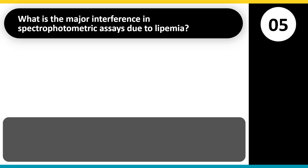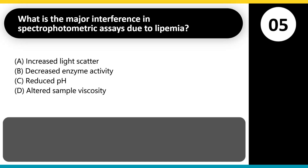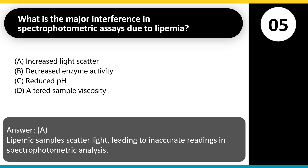What is the major interference in spectrophotometric assays due to lipemia? A. Increased light scatter. B. Decreased enzyme activity. C. Reduced pH. D. Altered sample viscosity. Answer: A. Lipemic samples scatter light, leading to inaccurate readings in spectrophotometric analysis.